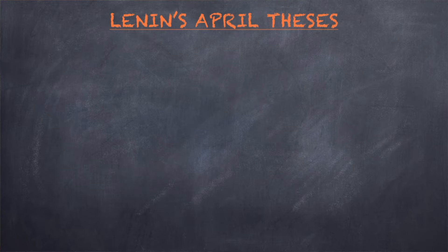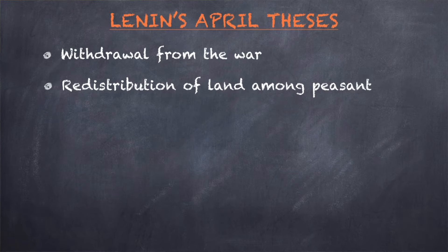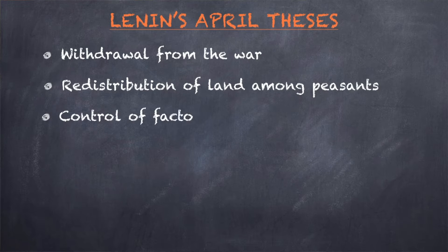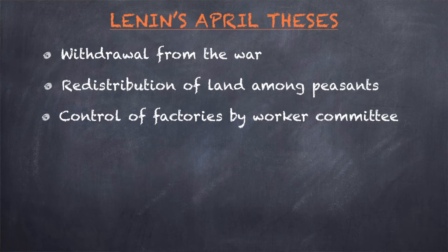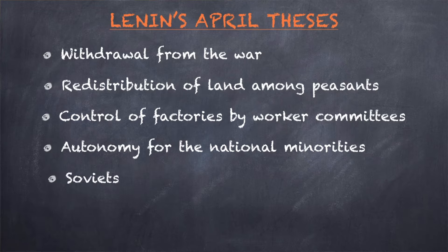The April Theses program was based on different measures: withdrawal from the war; redistribution of land among peasants; control of factories by workers' committees; autonomy for the national minorities; and Soviet government.